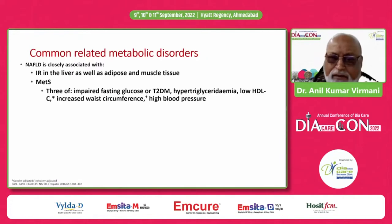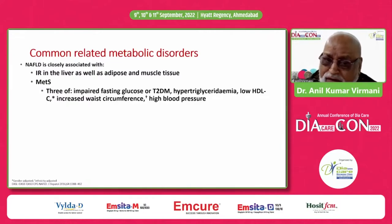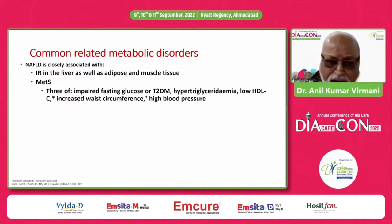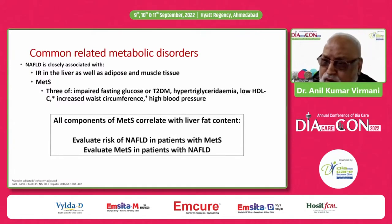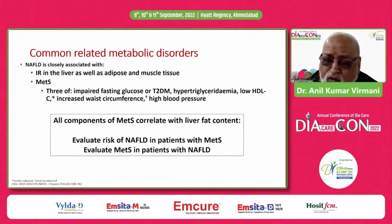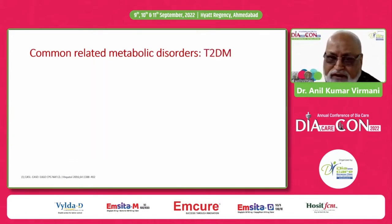The common related metabolic disorders include insulin resistance not only in the liver, but also in the adipose tissue and muscle tissue. The metabolic syndrome may consist of impaired fasting glucose or type 2 diabetes, hypertriglyceridemia, low HDL-C, increased waist circumference, and high blood pressure. All these components correlate with liver fat content, and one should evaluate the risk of non-alcoholic fatty liver disease in all patients with metabolic syndrome, and conversely evaluate metabolic syndrome in all patients with an ultrasound diagnosis of fatty liver.